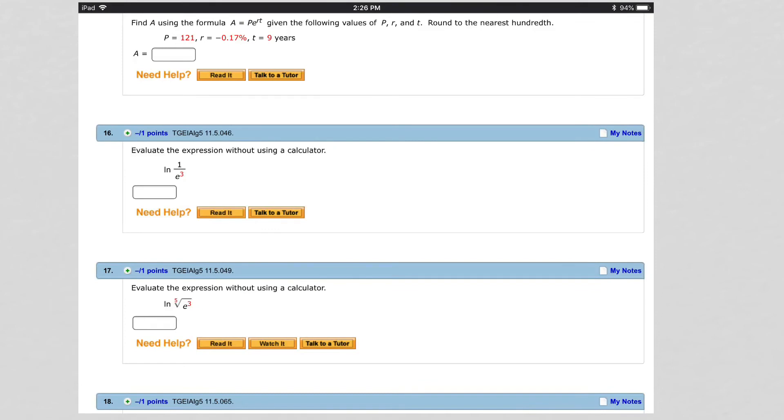So here again are some examples of changing the logarithmic expression to an exponential expression. Here's an example where you need that formula a to the m over n is the nth root of a to the m to find this correctly.